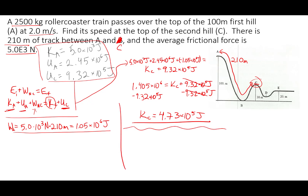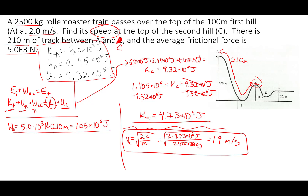Now the last step is to solve for the speed. We already have the formula: v equals the square root of 2 times kinetic energy over m. Plugging in: square root of 2 times 4.73 times 10⁵ joules over 2,500 kilograms gives 19 meters per second. That's my velocity at C — much more reasonable than before. It's still about 40 to 50 miles an hour, but that's because we're losing a lot of energy as we go down this hill due to friction.